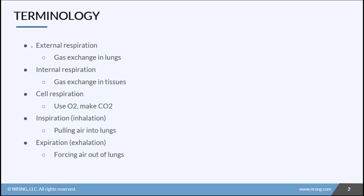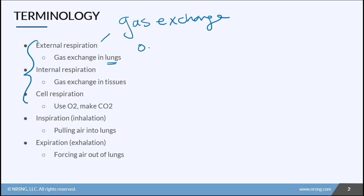First is respiration. Anytime you hear or see the word respiration, I want you to think gas exchange. There are three types of respiration. The first is external respiration, and that actually occurs in our lungs. This is when our bodies are exchanging oxygen and carbon dioxide between our lungs and the outside world — the exterior or external. We breathe in the oxygen, we breathe out the carbon dioxide. That exchange process occurs in the lungs, and it's called external respiration.